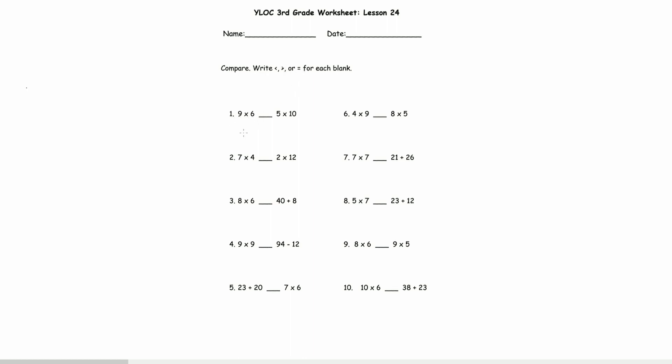So we have 6 times 9, 9 of 6 or 6 of 9, we have 54. And 5 times 10, if you multiply anything by 10, just add a 0 to that number, 50. And 54 is greater.